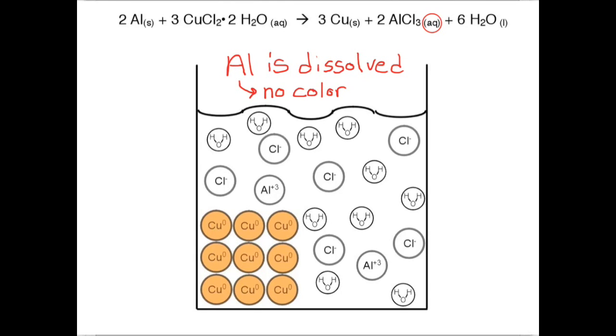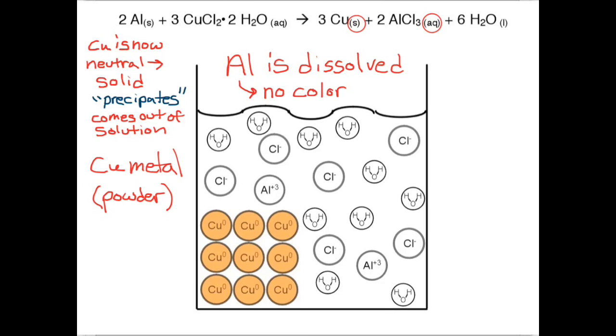The copper, which had previously been in ionic form, is now in neutral form, and therefore it becomes solid. We say that the copper precipitates from the solution. That means that it comes out of the solution. The copper could also be called a precipitate. You won't see a chunk of copper metal. Instead it will precipitate out as a powder.